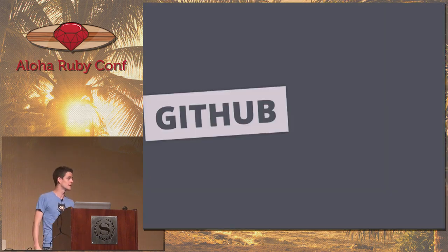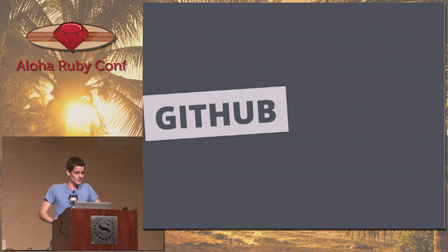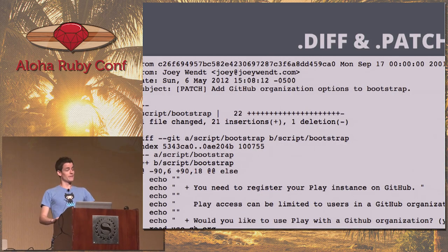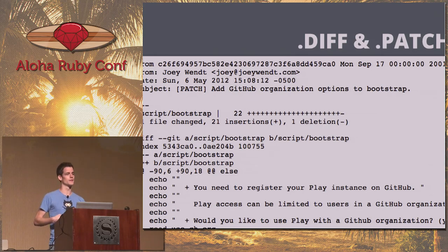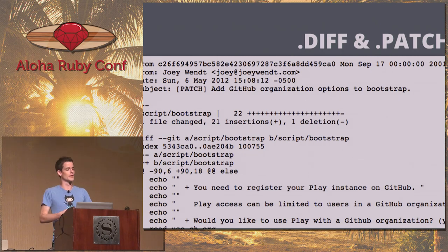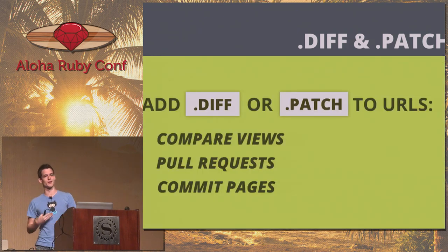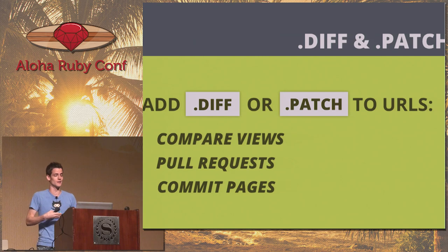It'll be two parts: Git and GitHub. Starting with GitHub — diff and patch. If you add .diff or .patch to any diff URL online, we'll generate the text-only output of that command through Git. So if you're dealing with anything on the command line and you want to get what actually changed in a commit, you'll get the diff output that way. This works not just on diff pages, but also on compare views, pull requests, and commit pages.